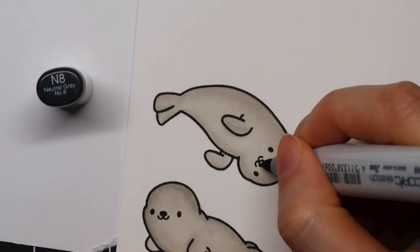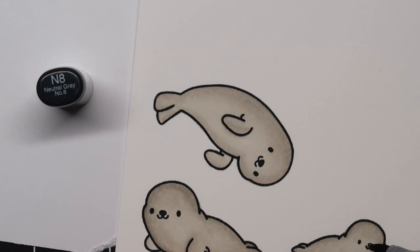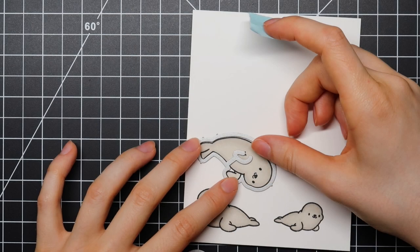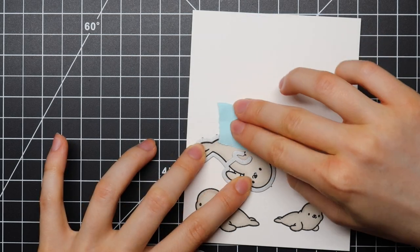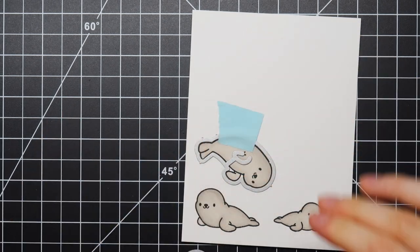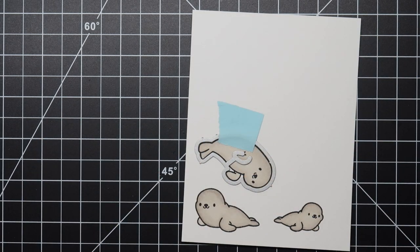Then I'm going in with the N8 marker to add a little bit of color to their adorable little noses. And now that I finished coloring all of these images, it's time to cut them out using the coordinating dies.